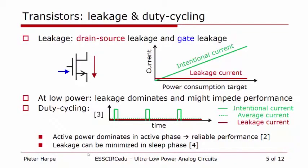A solution to that is using, for example, duty cycling techniques. In the lower graph, you see with the green dashed line what happens with a continuous-time, always-on circuit designed for low power — the current consumption is similar to the leakage, and because of that the performance may not be reliable. As an alternative, you can use duty cycling, shown by the green solid line. The circuit is on only for short moments in time; at those moments you use a very high current consumption, but the average power consumption and the performance are similar to the always-on circuit. The first advantage is that during the on phases the active current is much higher than the leakage, so you get your performance reliably. The second advantage is that during the sleep time, the off mode, you can optimize your circuit to have very low leakage, and in that way you reduce the losses.